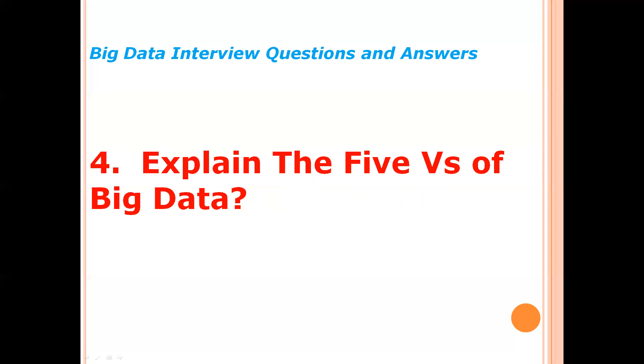Next, explain the five V's of big data. Big data is defined as a collection of large and complex unstructured data sets from where insights are derived from data analysis. The five V's of big data are: first, volume—amount of data in petabytes and exabytes, huge amount of data.